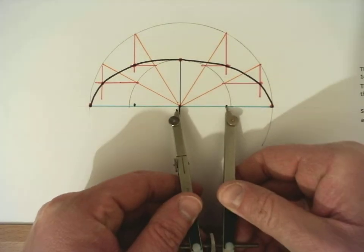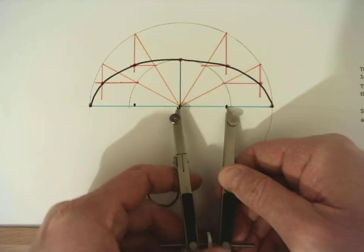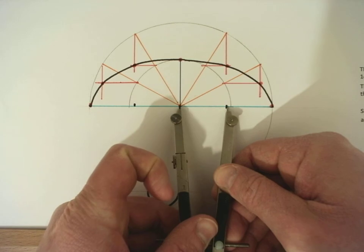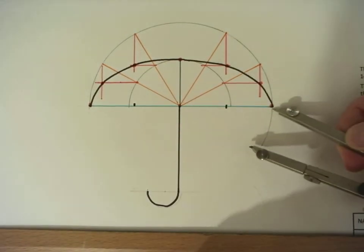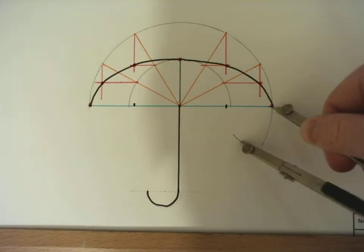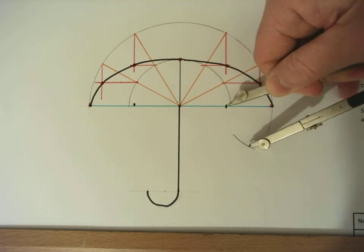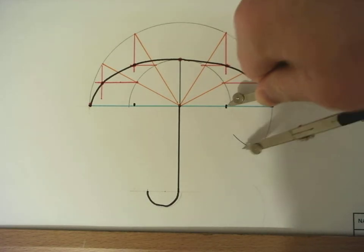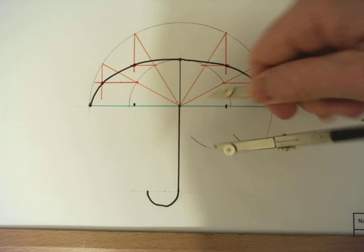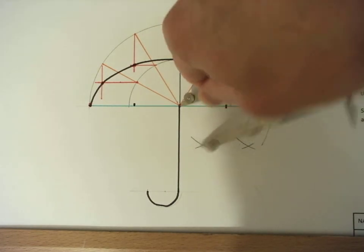Set your compass to 35. I'm just going to take this measurement. And then from the end point draw an arc, from the halfway point draw an arc, and again there's four arcs so we have to do this four times.